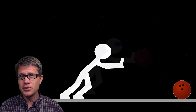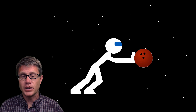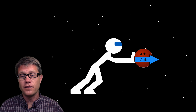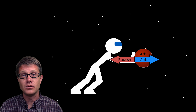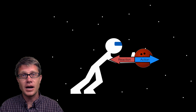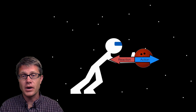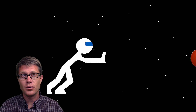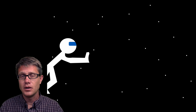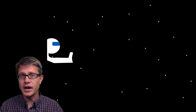Let us do this scenario again in space. You apply a force into the bowling ball and it applies an opposite and equal force back on you. With no ground, you are both going to accelerate away from each other. Why do you not move as fast as the ball? Because you have a greater mass.